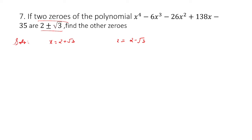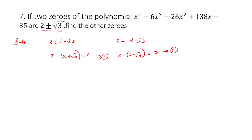We have to find the 2 other zeros. So, let us proceed. I can write x minus 2 plus root 3 equal to 0 — bringing 2 plus root 3 to the left-hand side, and same for the other. I will write these as equation 1 and equation 2. Therefore, multiplying equation 1 and equation 2 — we are just using a reverse of splitting the middle terms, building it up from the last steps to the first step.